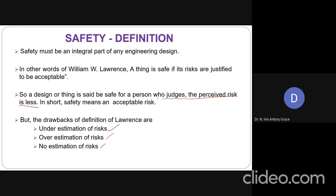What are the drawbacks in the definition of Lawrence? First is underestimation of risk. An unsafe product, because of the misjudgment of a person — since as per Lawrence it is purely based on the judgment of a person whether a thing is safe or not — because of a misjudgment, an unsafe product may also be considered to be a safe product. This is called underestimation: we are underestimating the risk involved in it.